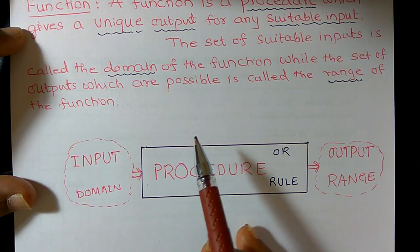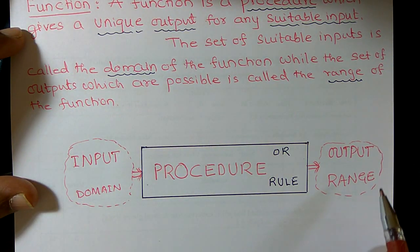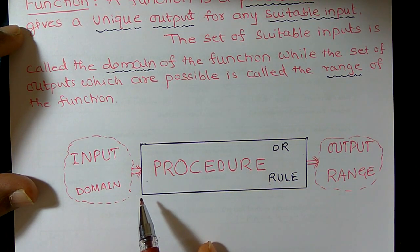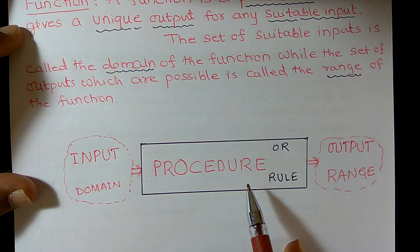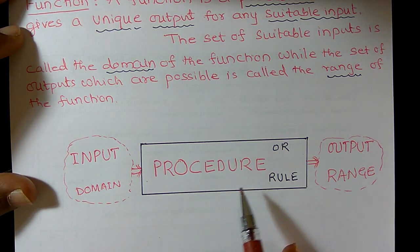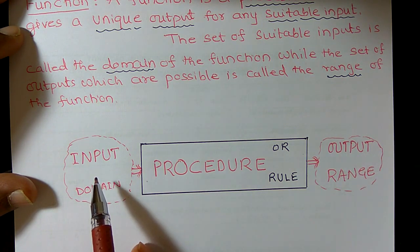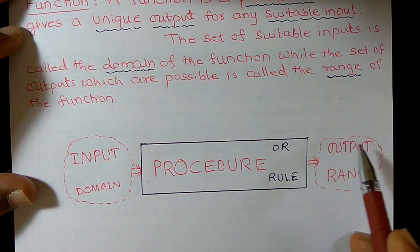Now usually the function can be represented using a diagram. Here I want to use a particular diagram. So this box I want to call as a procedure. Procedure means set of rules. So it is an input. For each input, you will get a unique output.